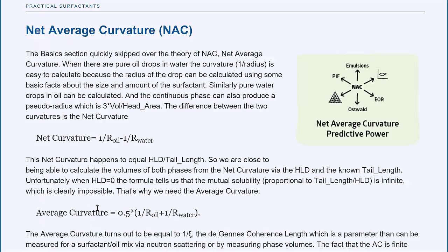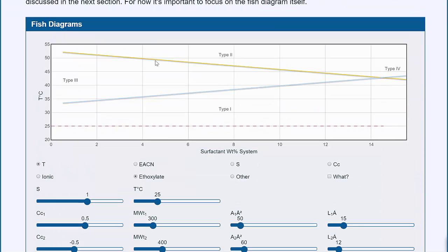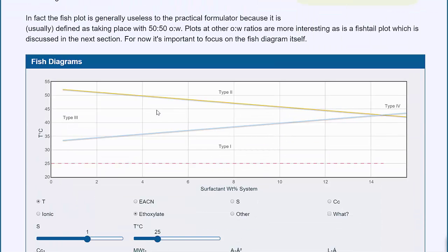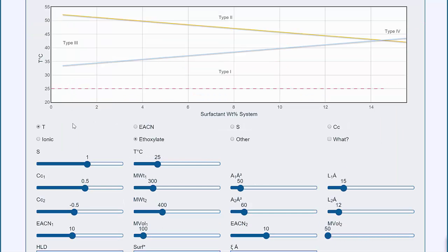One of the things we can predict using NAC is the fish diagram. Here I've got a classic fish diagram. The head of the fish is missing as it's a small effect. We're saying we have a salinity, we have a temperature, it doesn't matter in this case, and we have a cc of the surfactant.